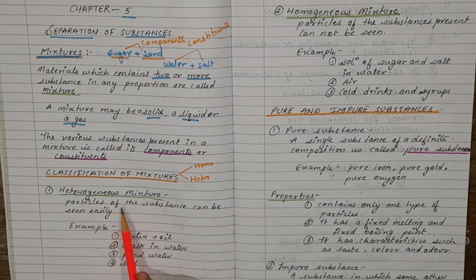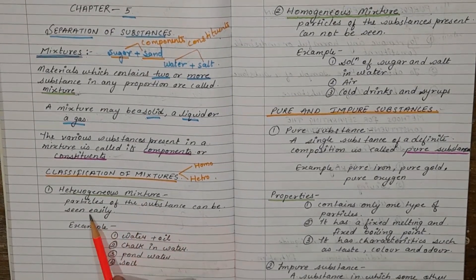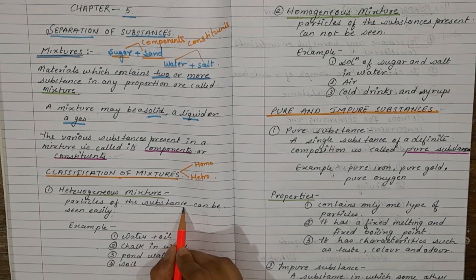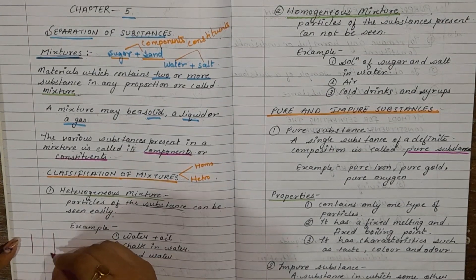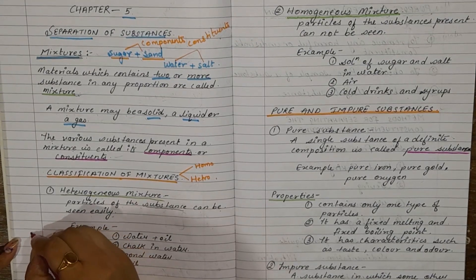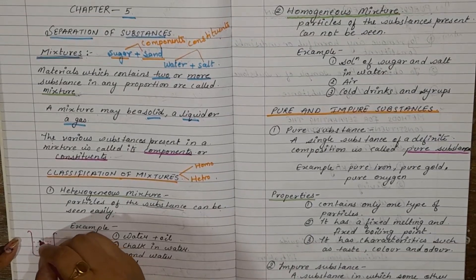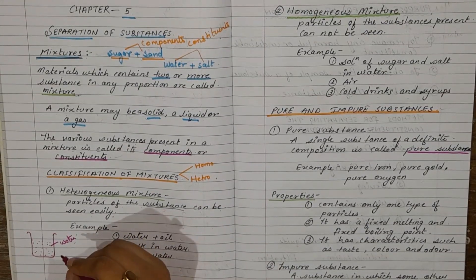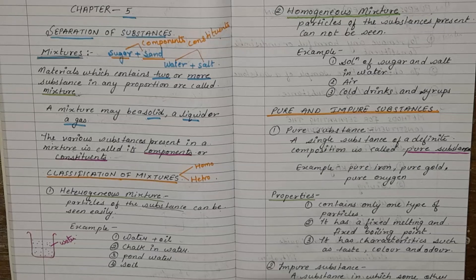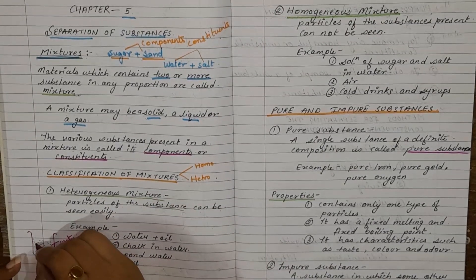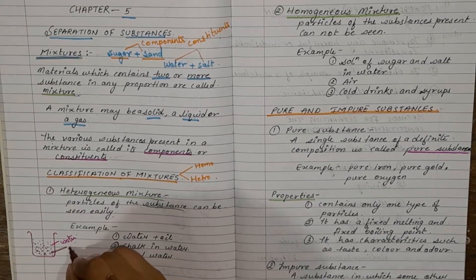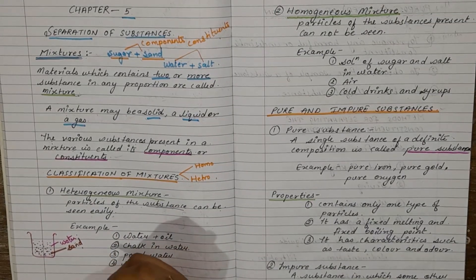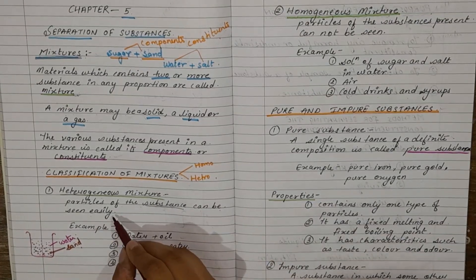Heterogeneous mixture — particles of the substance can be seen easily, meaning the particles of the substance are visible in this type of mixture. For example, here I have a beaker with a mixture of water and sand. I can denote sand with brown color. The particles of sand are visible in water, so it is a heterogeneous mixture.